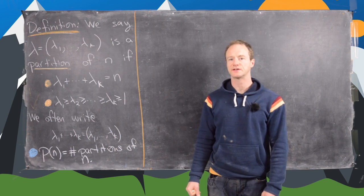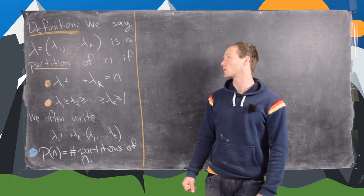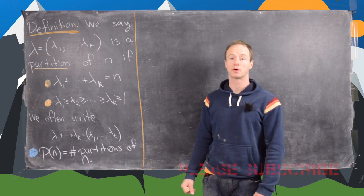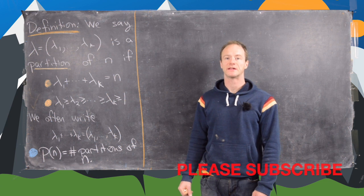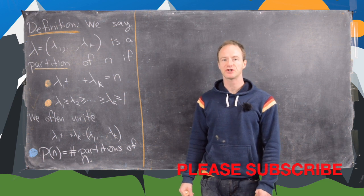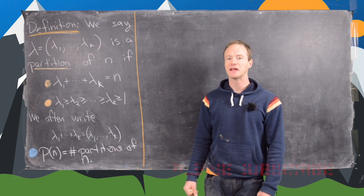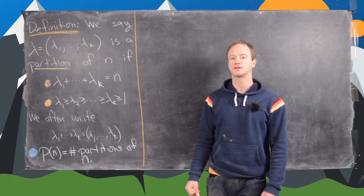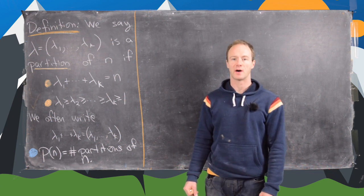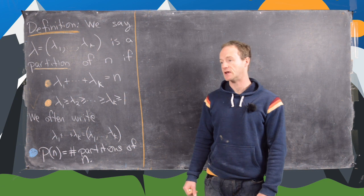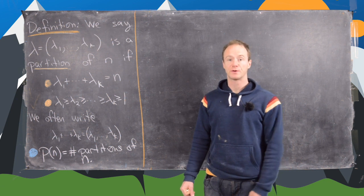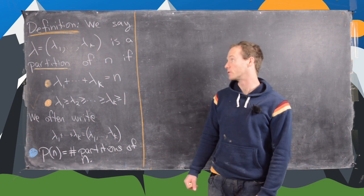This is the first in a series of videos where we are going to explore something called integer partitions, leading up towards the Rogers-Ramanujan identity, for which we will provide a proof.